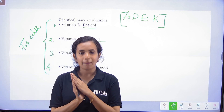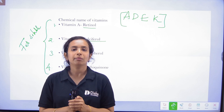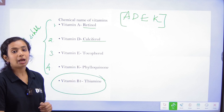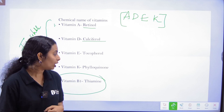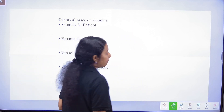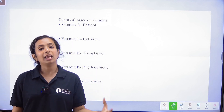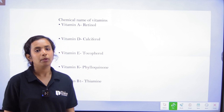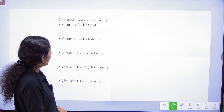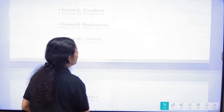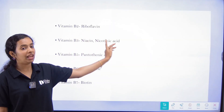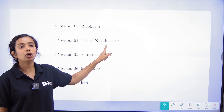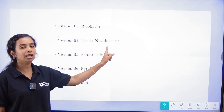Now we will study the B-complex vitamins and their chemical names. B1's chemical name is Thiamine. If there is a Thiamine deficiency, that is a B1 deficiency.